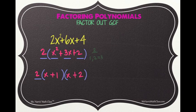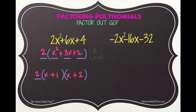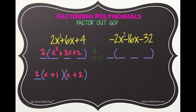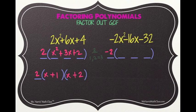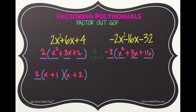Lastly, we'll factor the trinomial negative 2x squared minus 16x minus 32. Since there is a common factor, we begin by drawing a skeleton. Whenever your lead coefficient is negative, ensure you factor out the negative along with the greatest common factor. Our GCF is negative 2. Negative 2 times x squared is negative 2x squared, negative 2 times positive 8x is negative 16x, and negative 2 times positive 16 is negative 32.